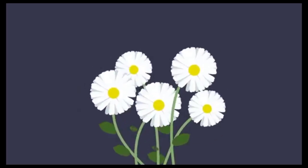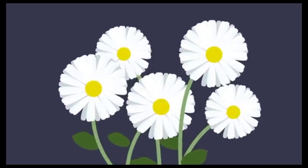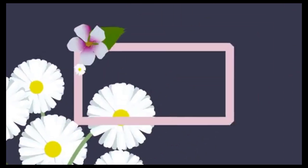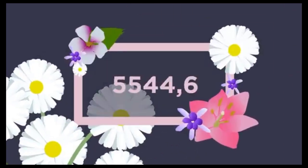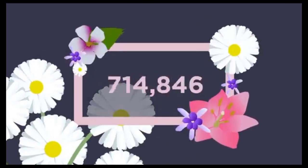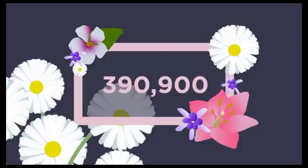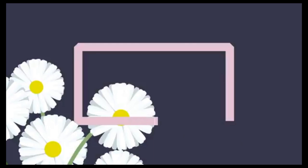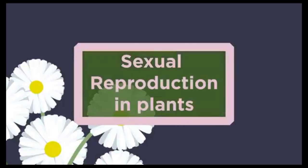In this video we will be looking at sexual reproduction in plants. Did you know that there are an estimated 390,900 plant species known to science? This diversity of plant species is in part due to sexual reproduction in plants.